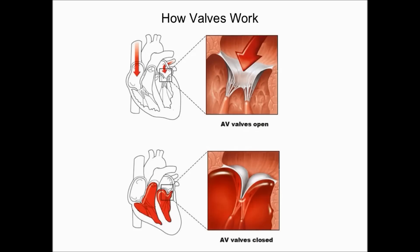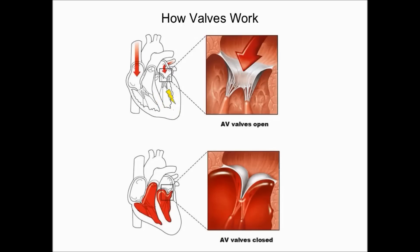How do valves keep blood flowing in one direction? For atrioventricular valves, the cusps are attached to chordae tendineae, which are attached to papillary muscles on the inner wall of the ventricles. When an action potential passes into the ventricular walls, it also passes to the papillary muscles, causing them to contract. When papillary muscles contract, they pull on the chordae tendineae, which pulls on the cusps, closing the valves and preventing blood from flowing back into the atria.